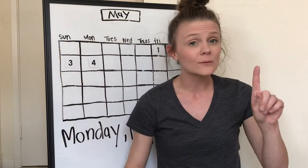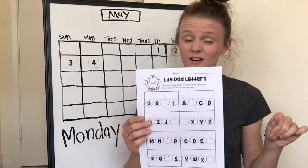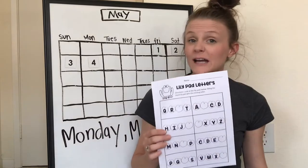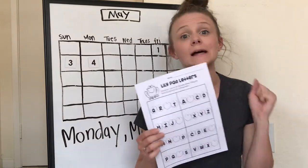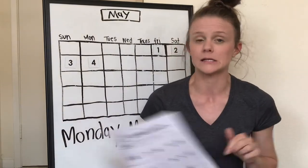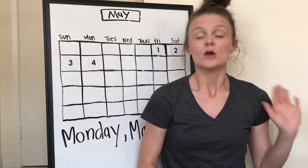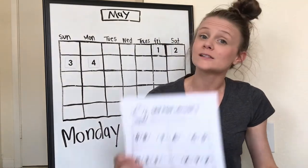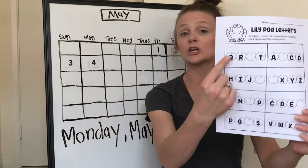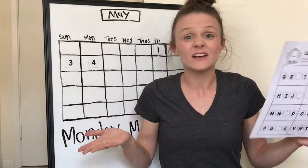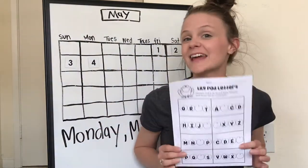We are going to practice on the harder one today because it doesn't start with A. We're going to have to figure out which letter is missing just with the four letters they give us, without going all the way back to the beginning of the alphabet. Go grab your Lily pads worksheet that starts with letter Q. The only other thing you'll need is your pencil, then come back and we're going to do it together.